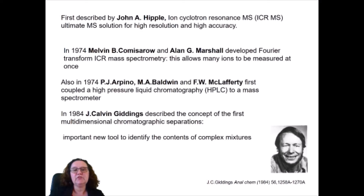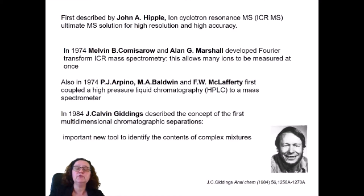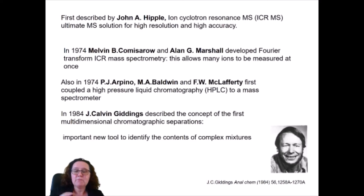New improvements came in the late 60s, 70s, and 80s. Hippel developed something called ion cyclotron resonance mass spectrometry, which really improved the resolution and accuracy of the instruments. In the mid-70s, Commissarov and Marshall developed something called Fourier transform ICR mass spectrometry, and that allowed many different ions to be measured at the same time.